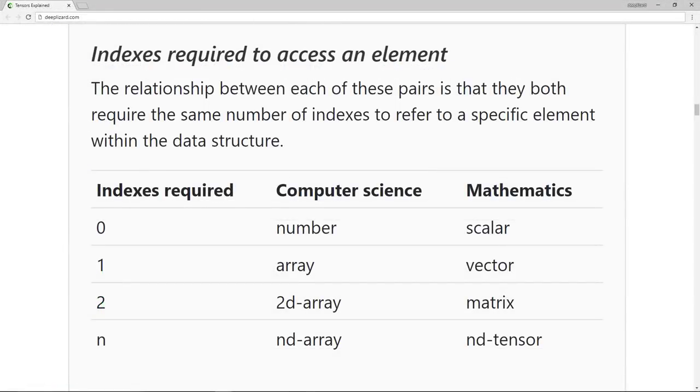When more than two indices are required to access a specific element, we stop giving specific names to the data structures and begin using more general language. In mathematics, we stop using words like scalar, vector, and matrix, and we start using the word tensor, or nd tensor. The n tells us the number of indices required to access a specific element within the structure.